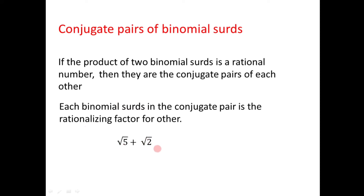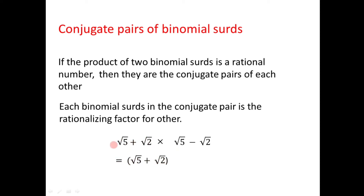Let us illustrate this with an example. Take √5 − √2. Its conjugate pair should be √5 + √2. By definition, if the product of these two binomial surds is a rational number, they are conjugate pairs. Let us check: the product is (√5 + √2) multiplied by (√5 − √2). We can see this is in the form (a + b)(a − b).